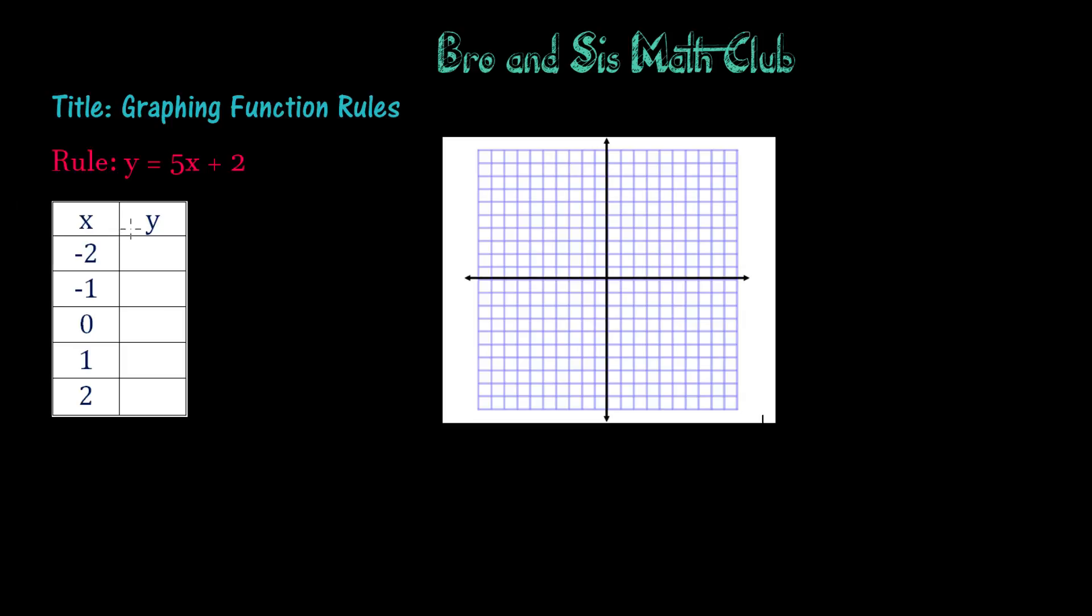The very first x value given is negative 2, so we need to plug it in into the x variable in our rule. We will have y equals 5 times negative 2 plus 2. Remember that it's important to put the variable substitution, which is negative 2 in this case, in parentheses, because if we don't, it will look like this.